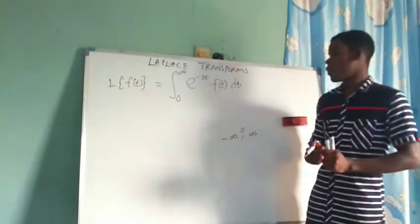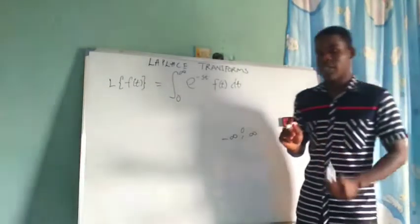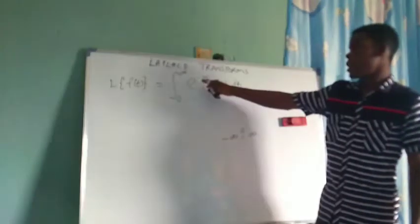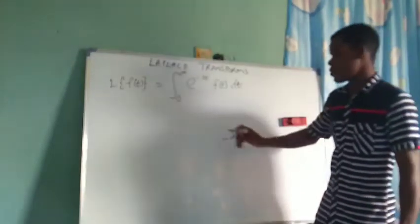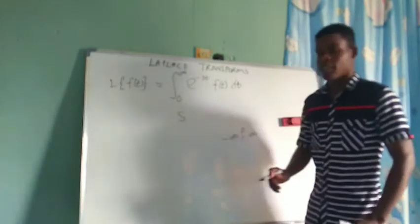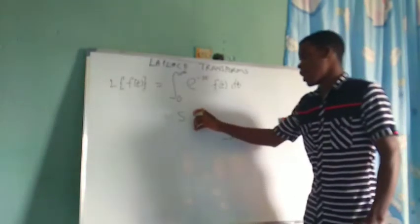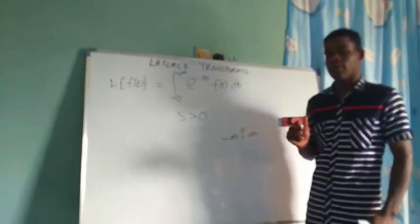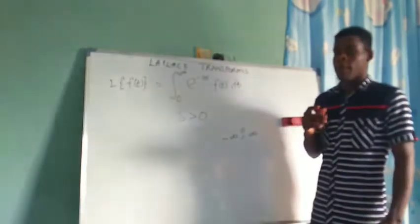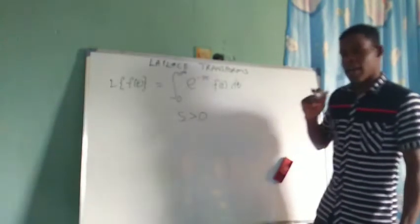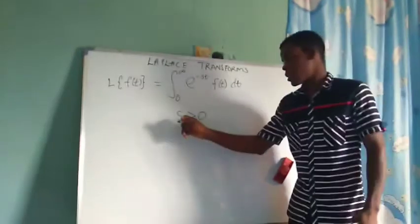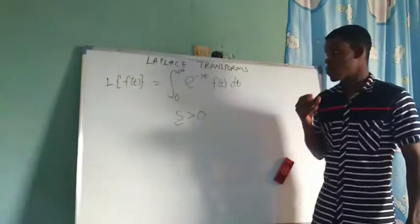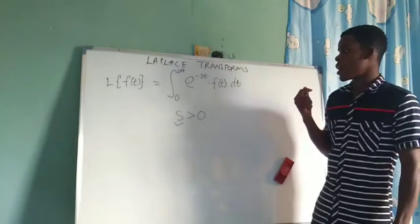Take note that when we take the Laplace transform, this e^(−ST) — S right here is just a parameter that we've brought in. And this parameter S is greater than 0. Take note of that. And this parameter S is said to be very large.